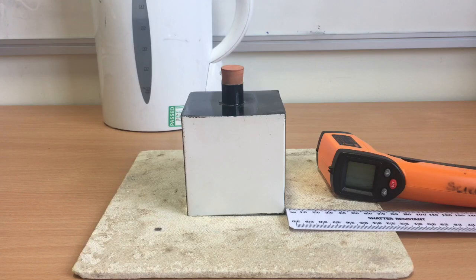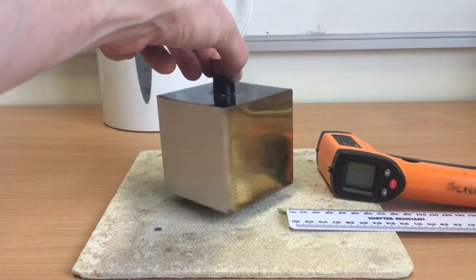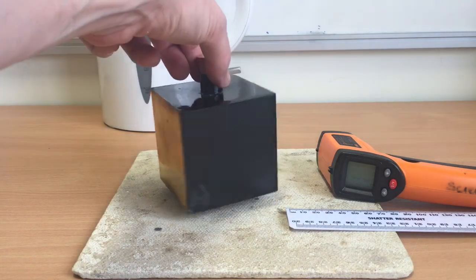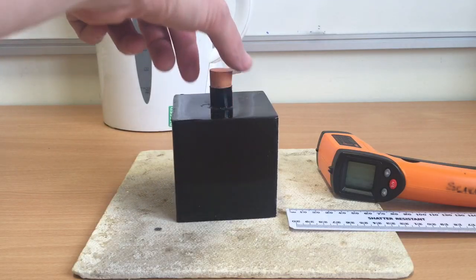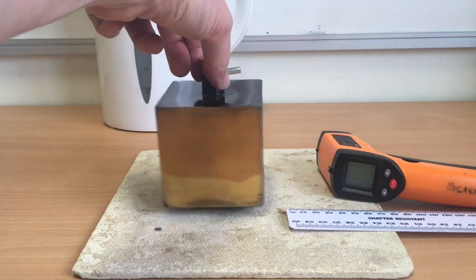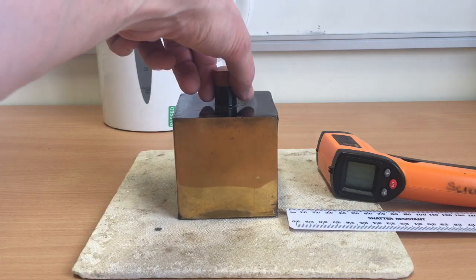A Leslie Cube is made of all the same material, but you'll see that each surface on the side has been painted differently. So we've got a matte black surface, a shiny black surface, a white surface, and a shiny metallic surface.